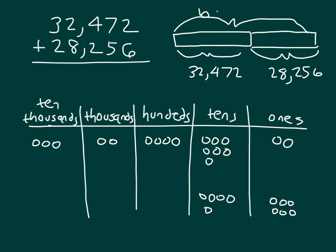Notice that we'll have a regroup in the tens place for sure. We have two hundreds, eight thousands, and two ten-thousands.